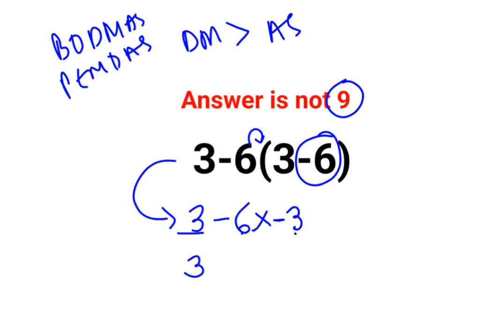So here we will keep 3 as it is. Minus 6 multiplied by minus 3 is plus 18. Multiplication of 2 negative numbers gets you positive value. So answer for this question is 3 plus 18 which is 21.